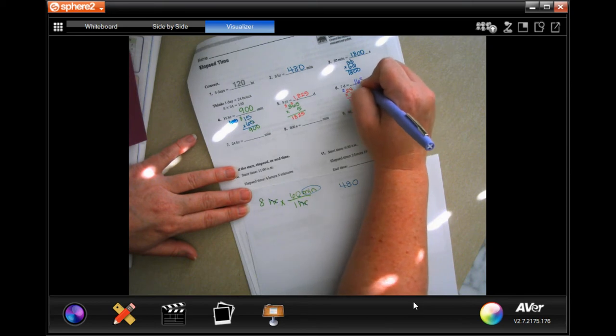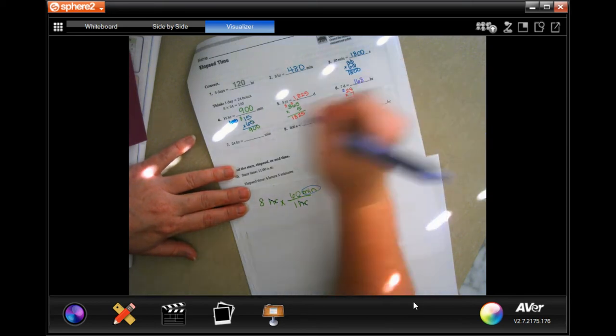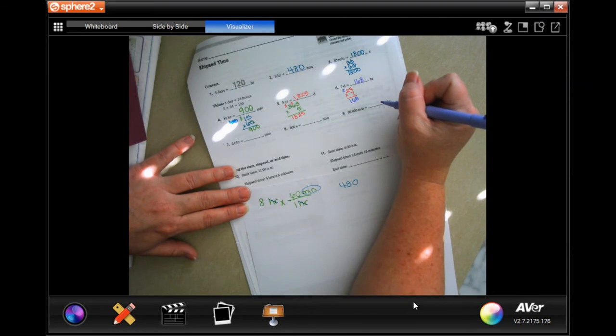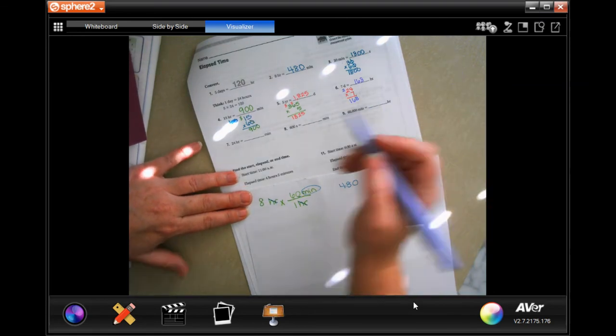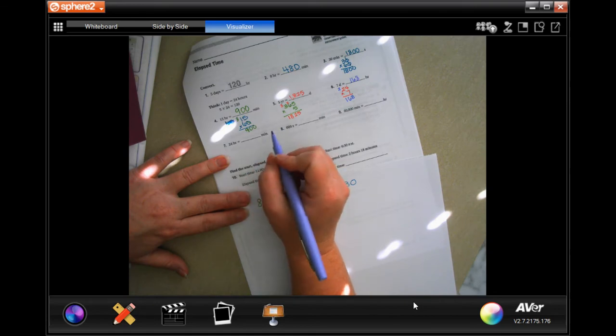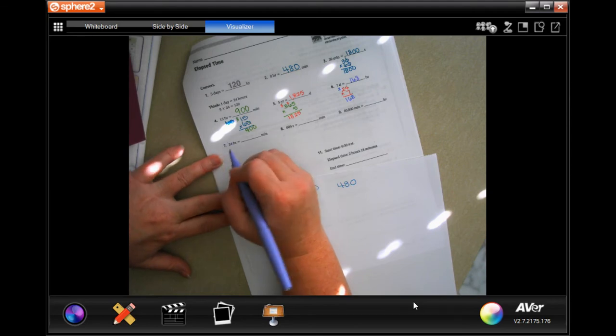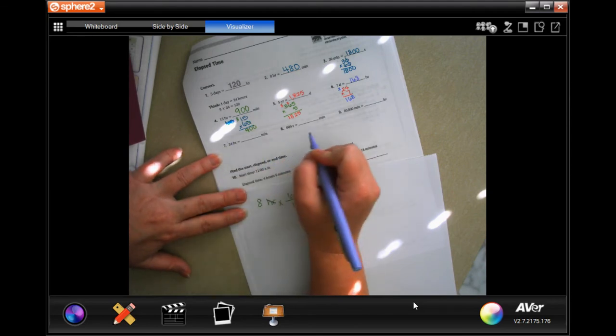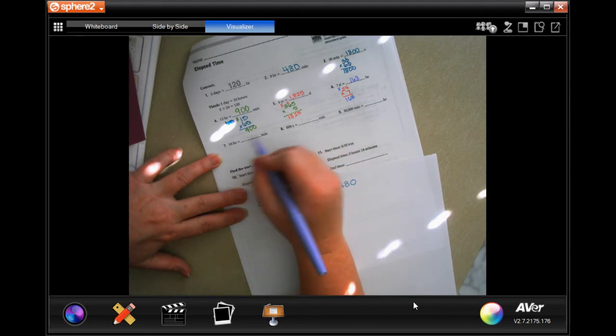I'm going to let you guys do 7 through 9. I will warn you that on these ones you get to divide. These ones are going to be division - you're going from the smaller unit to the bigger, so you're going to divide not multiply.